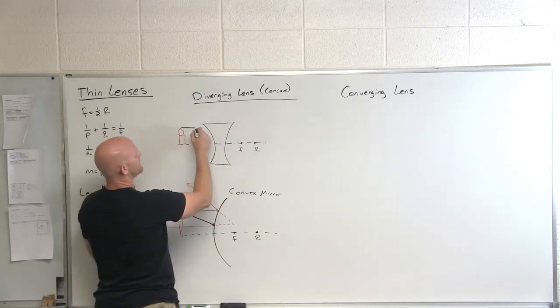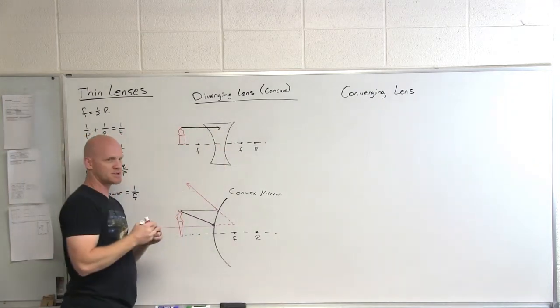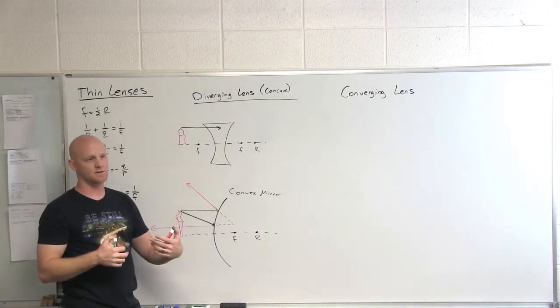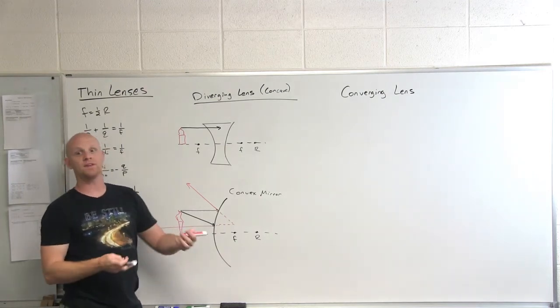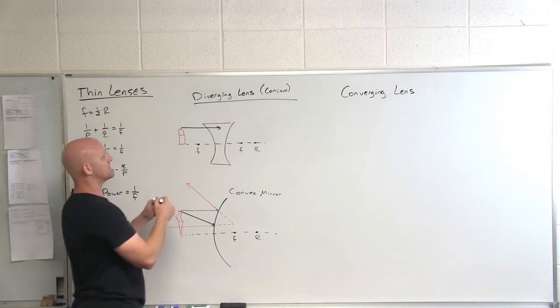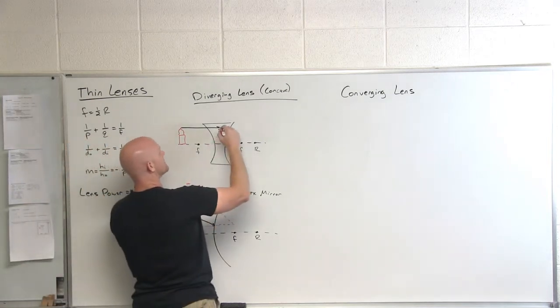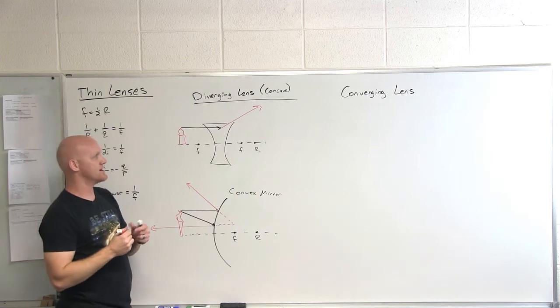The first ray we drew was coming in parallel to the principal axis. And where does that one typically get reflected when it was on a mirror? Back through the focal point, or at least if it was coming from a focal point. And that's what we're going to see here is actually as if it were coming from that lovely focal point.